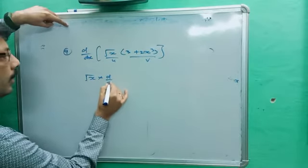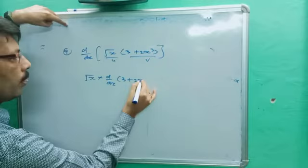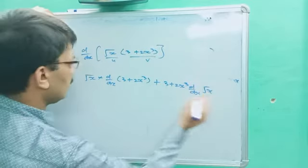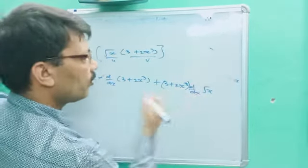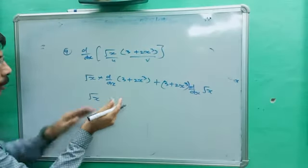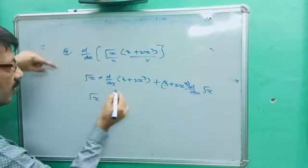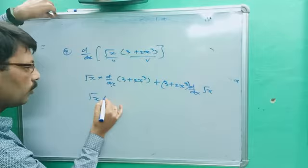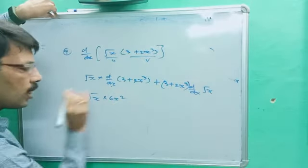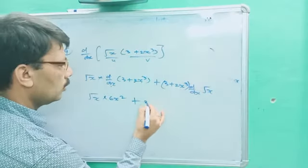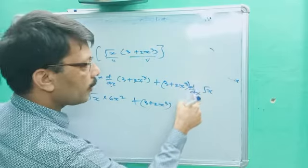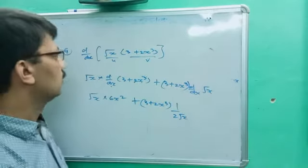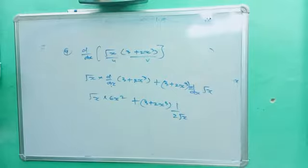Applying product rule: root x · d/dx(3 + 2x³) plus (3 + 2x³) · d/dx(root x). Differentiating inside: d/dx of 3 is 0 and d/dx of 2x³ is 6x². So root x · 6x² plus (3 + 2x³) · 1 upon 2 root x. This is the answer for the ninth question.